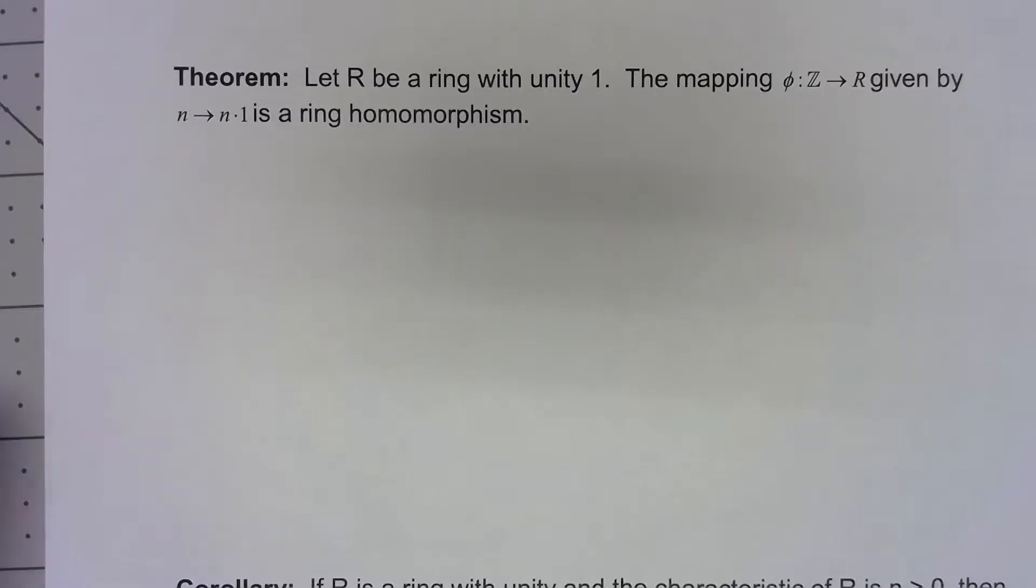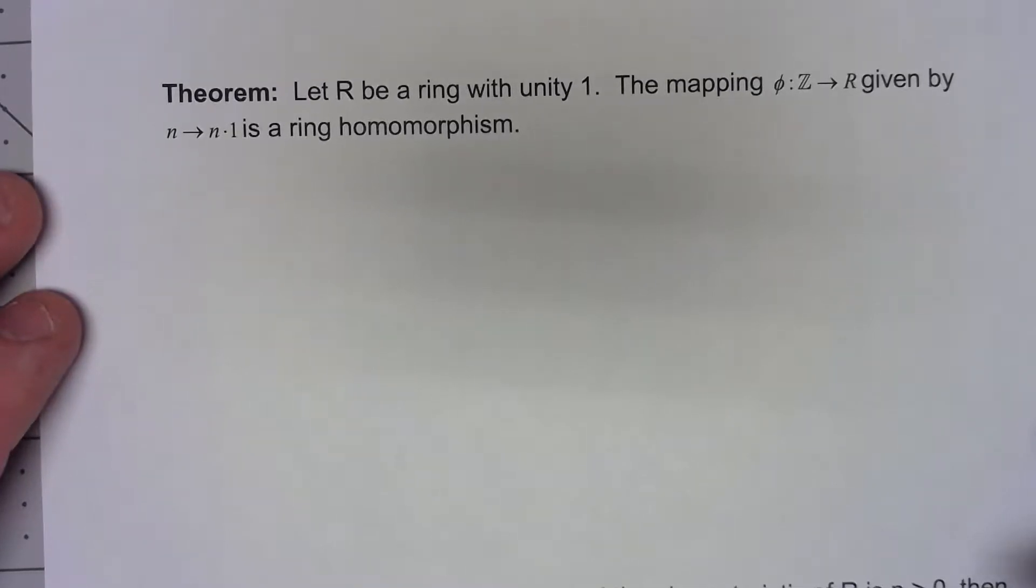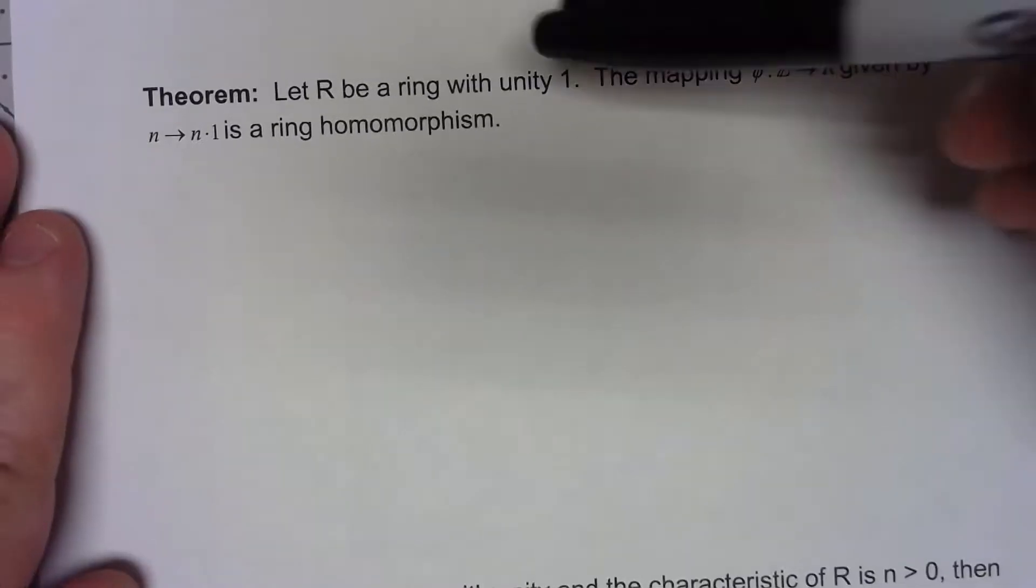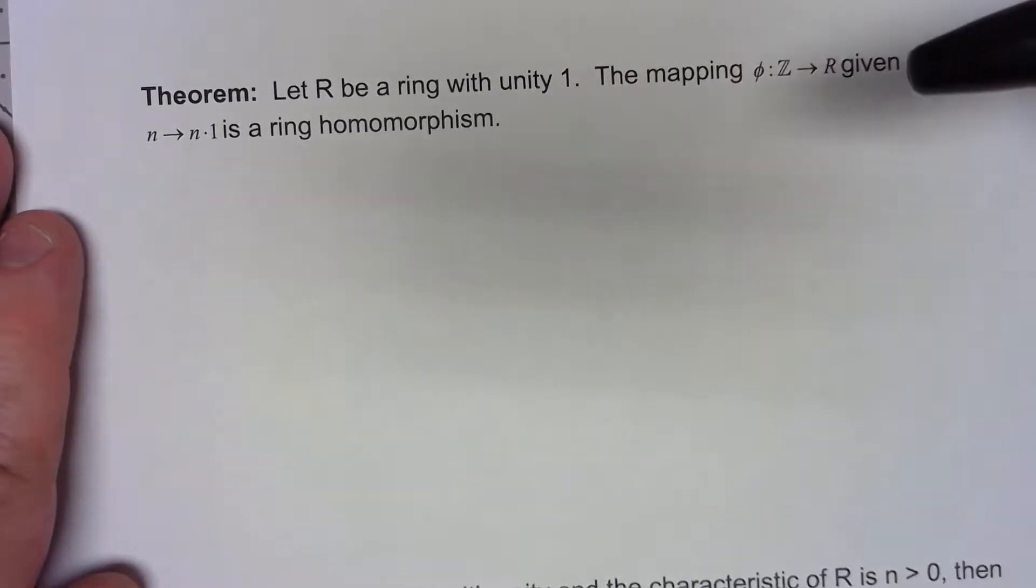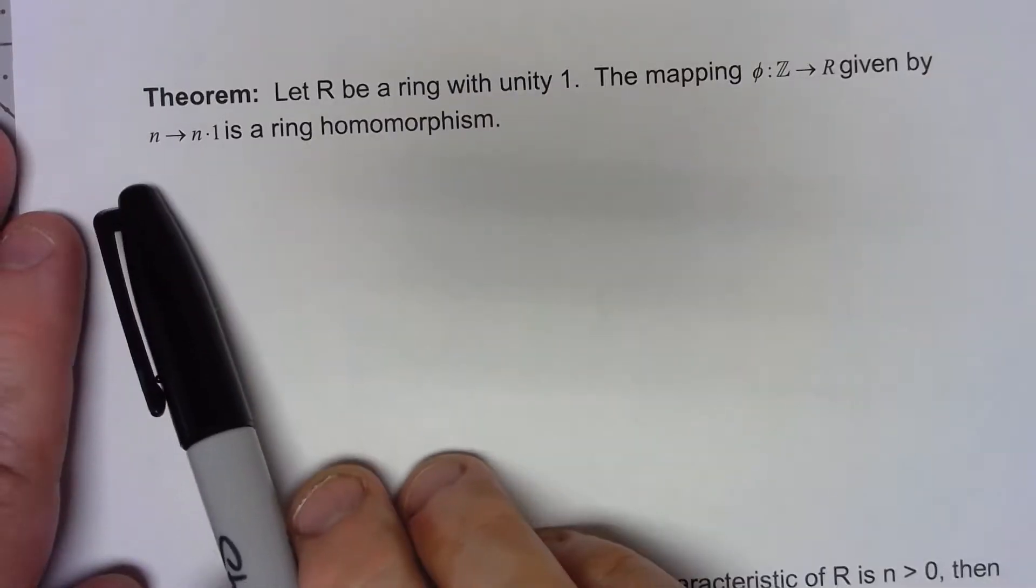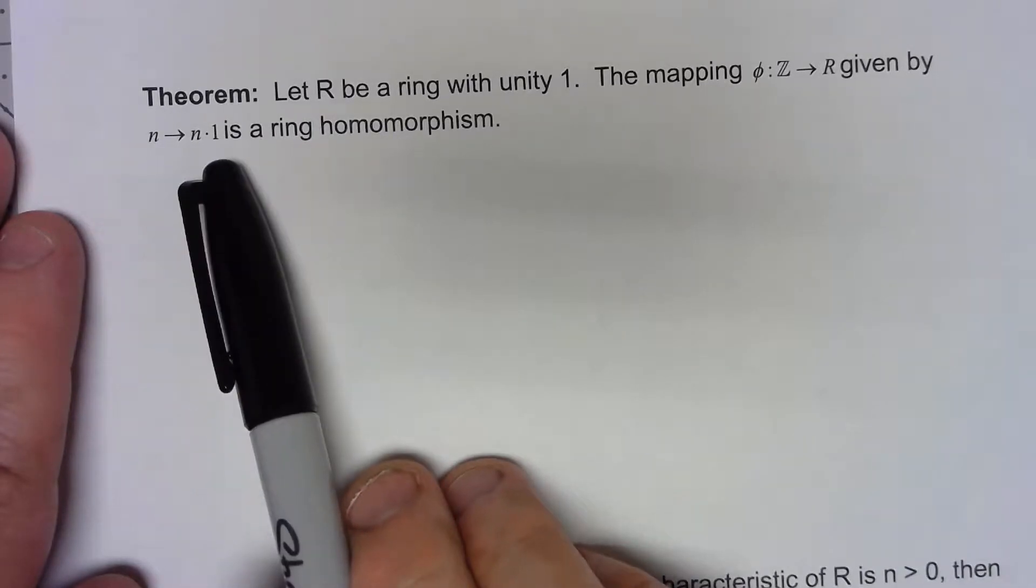Let's start with a theorem that seems fairly straightforward, and in a lot of ways it is, but there's actually some very important consequences of such a simple little theorem. So let's say we have a ring, it has a unity 1, and we can make a mapping from the integers into that ring given by the integer n maps to n times 1.